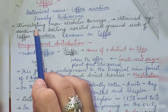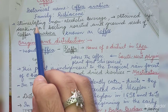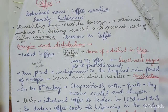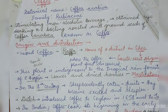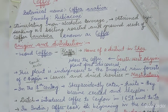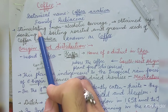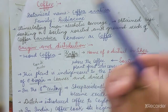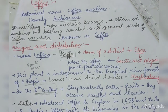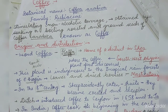Coffee stimulates our central nervous system. So when you feel fatigued or exhausted, you go for a cup of coffee. What coffee does is it stimulates our nervous system, so all that fatigue is suppressed.